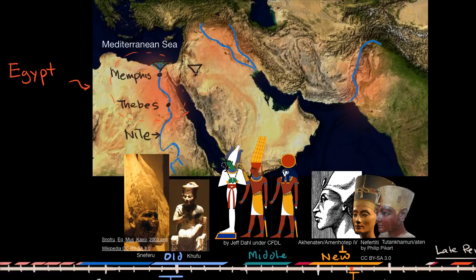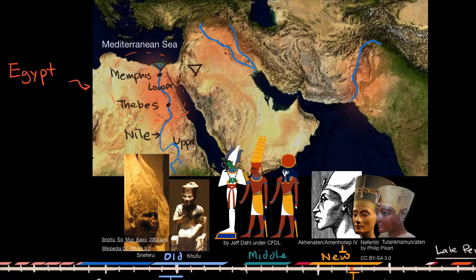The Nile flows from eastern mid-Africa up into the Mediterranean Sea. Because it has this northward flow, the southern parts of the river are up-river and are actually called the upper Nile. So the upper Nile is actually south of the lower Nile — that's because the upper Nile is up-river.